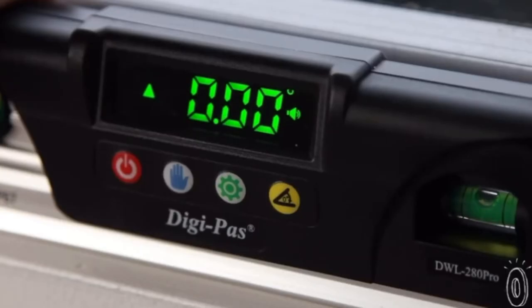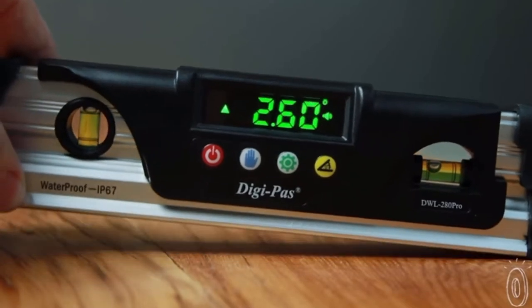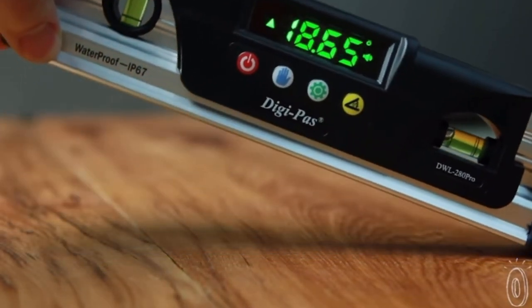When it's at true zero, it gives a little beep, and as you move it, DigiPass measures the angle and displays it as a number.